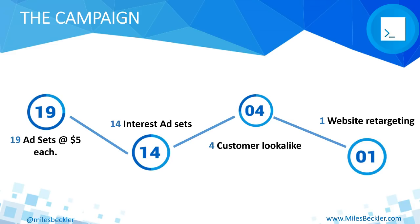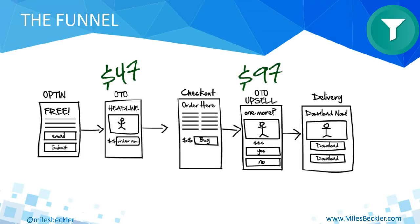I started with 19 ad sets at $5 each. This is my $5 Facebook ad method. I used 19 ad sets — 14 of those were interest-based ad sets. This is me in the 'stealing my competitors' customers' mode, targeting my 14 biggest competitors. Then I used four customer lookalike audiences — lookalikes of my customer list — and then I used my website retargeting.